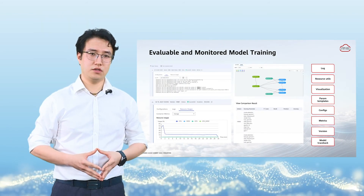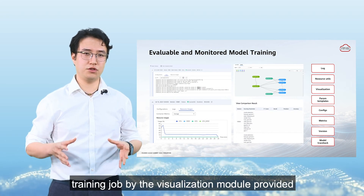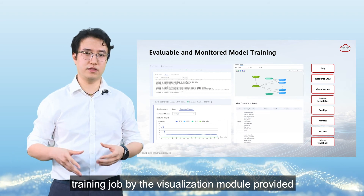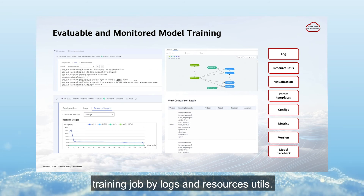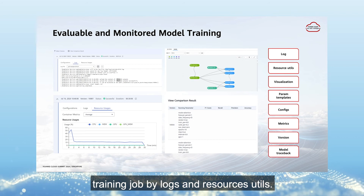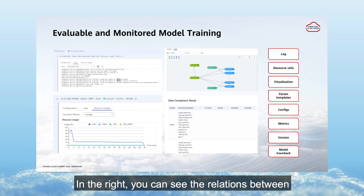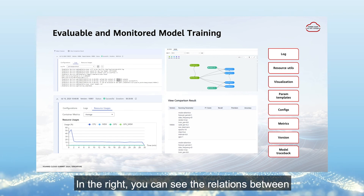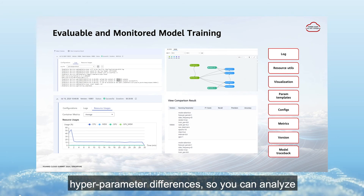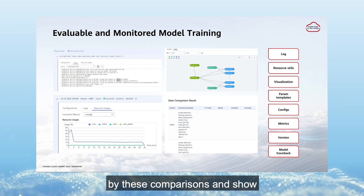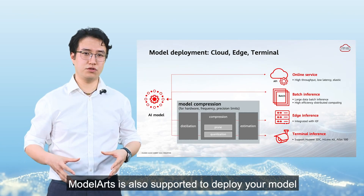After the training job launches, you can monitor the ongoing training job through the visualization module provided by Model Arts. The figures on the left show the ongoing training job via logs and resource utilization. On the right, you can see the relationships between different experiments and their hyperparameter differences, allowing you to analyze and compare results.